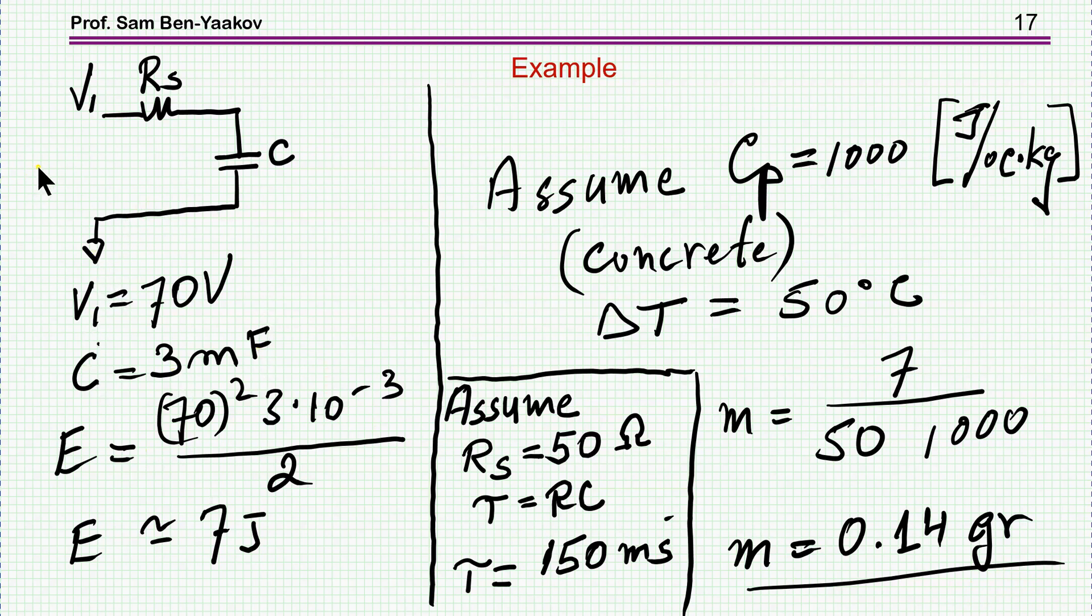We assume that we allow an increase of 50 degrees centigrade, then we find that for this particular case we need a mass of 0.14 gram. So we need quite a bit of mass in order to store the amount of energy that is dissipated during this process, not to exceed the 50 degree. By the way, in this case, 50 ohm and 3 millifarad has a time constant of 150 milliseconds, so the duration will be like say 3 tau, about 1 second until the whole thing ends up.